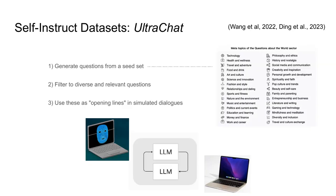Researchers showed that through a method generally known as self-instruct, you could use a better closed-source language model to produce instructions that could help these models perform better on these tasks. We'll use an example from a system known as UltraChat that produces a strong self-instruct dataset. The way it works is that you first collect a seed set consisting of a large set of different topics that you'd like your language model to perform well on. This might be collected from Wikipedia, or by having a large language model generate a large set of topics.